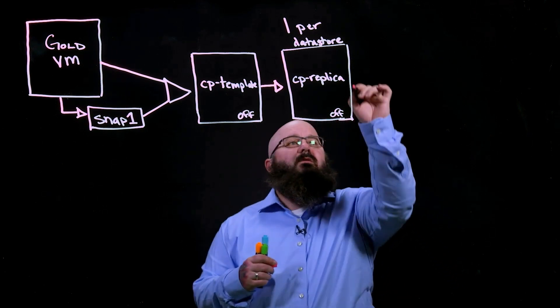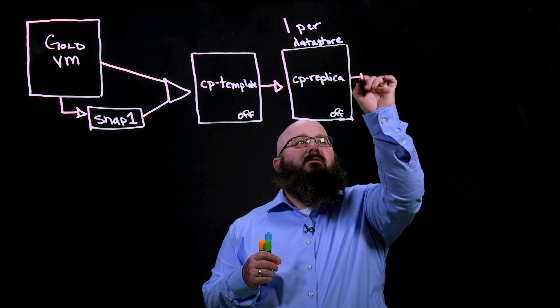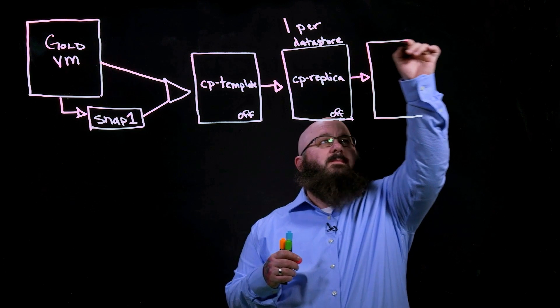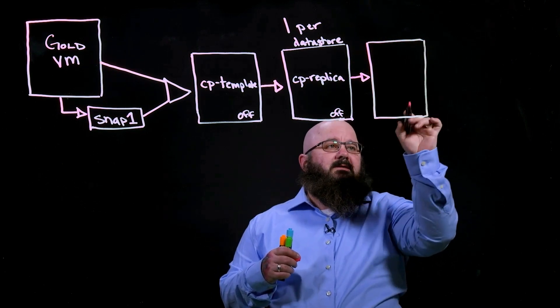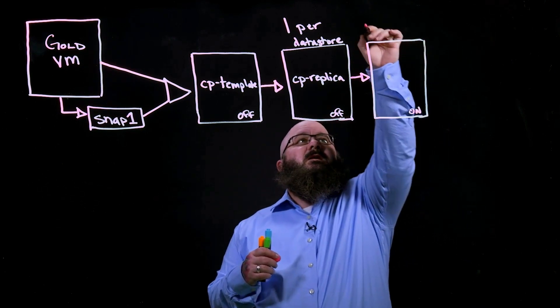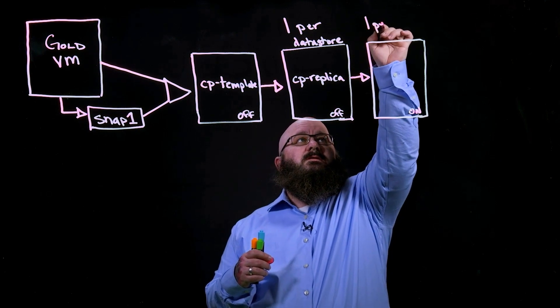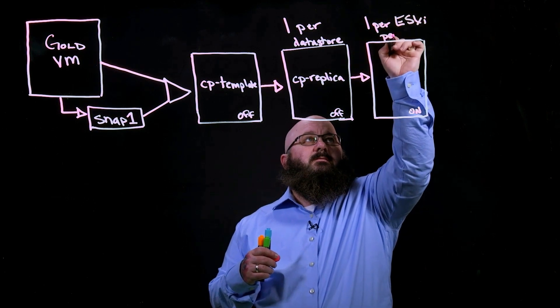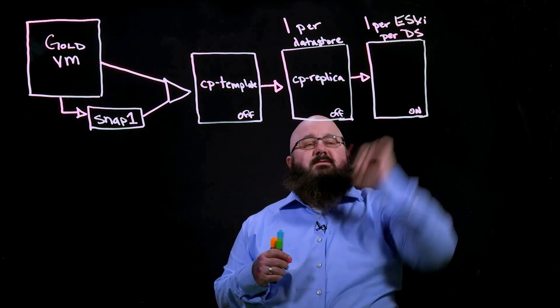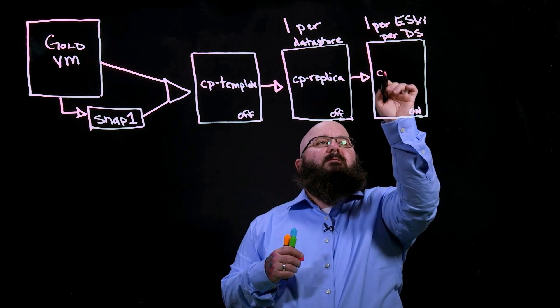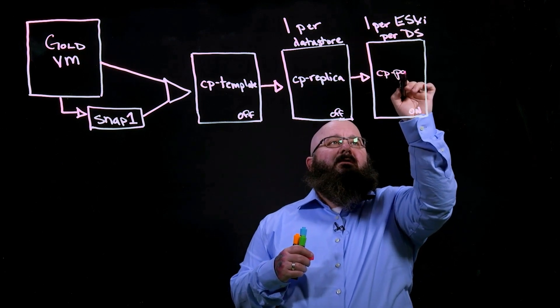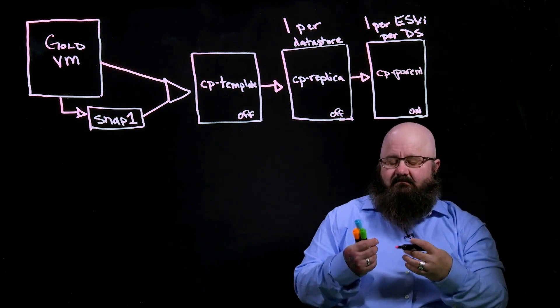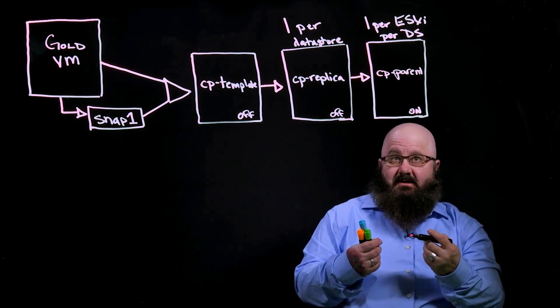Once the replica is created, we'll go ahead and we'll create our parent. Now, with the parent, the thing to remember is it's on and there is one per ESXi host per data store. Okay. So this is our parent. The parent is the part that loads up the OS in the memory and sets up that shared area.